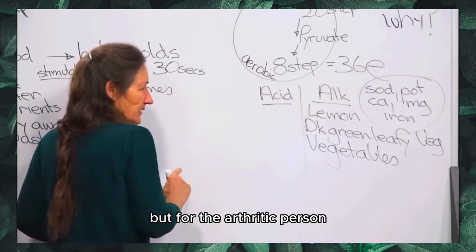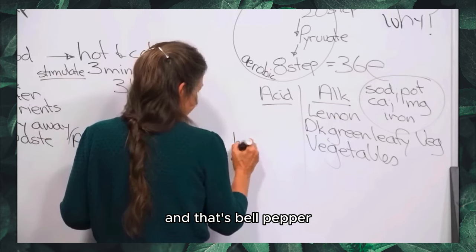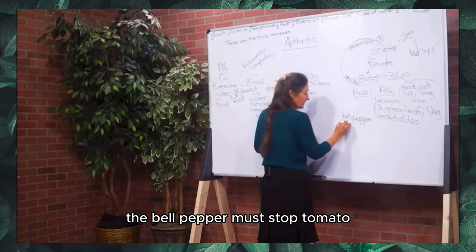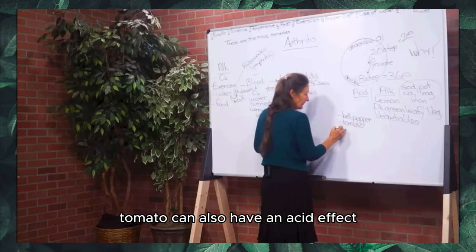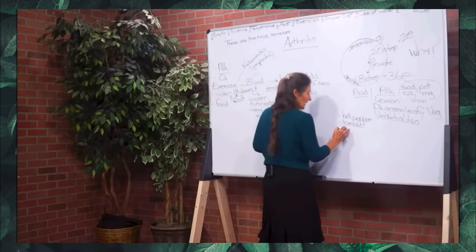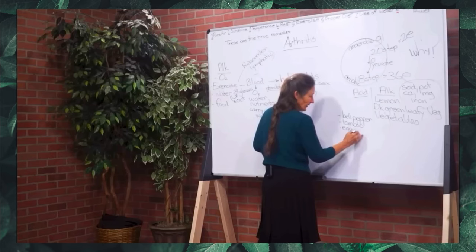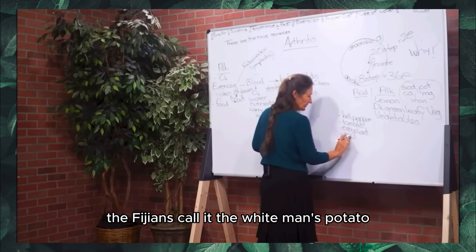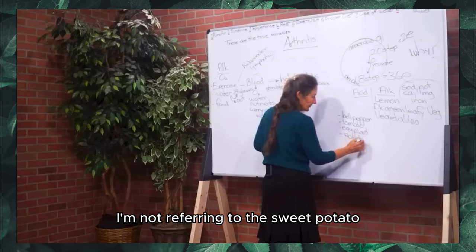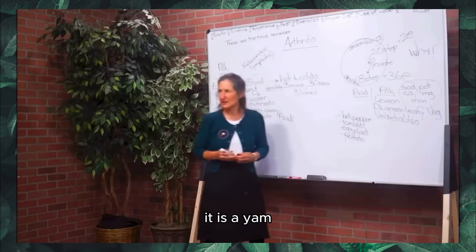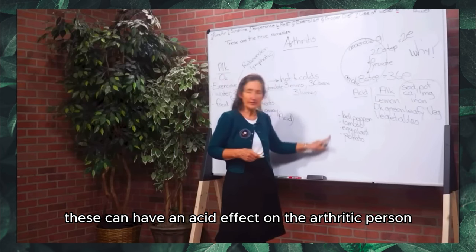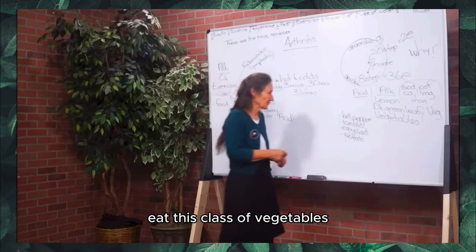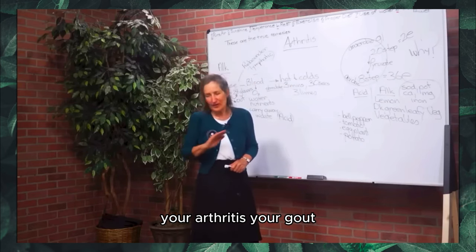For the arthritic person, there are a few vegetables that can have an acid effect. Bell pepper must stop when someone wants to conquer arthritis. Tomato can also have an acid effect on someone suffering from gout or arthritis. Eggplant — sometimes called aubergine — and also the English potato. I'm not referring to the sweet potato, which is actually a yam. These must stop — not forever, just until you've conquered the arthritis.